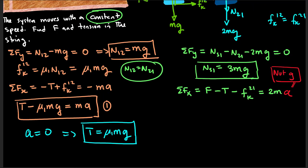So this means that F minus T, which is μ1 mg, minus Fk21 is equal to 2ma.